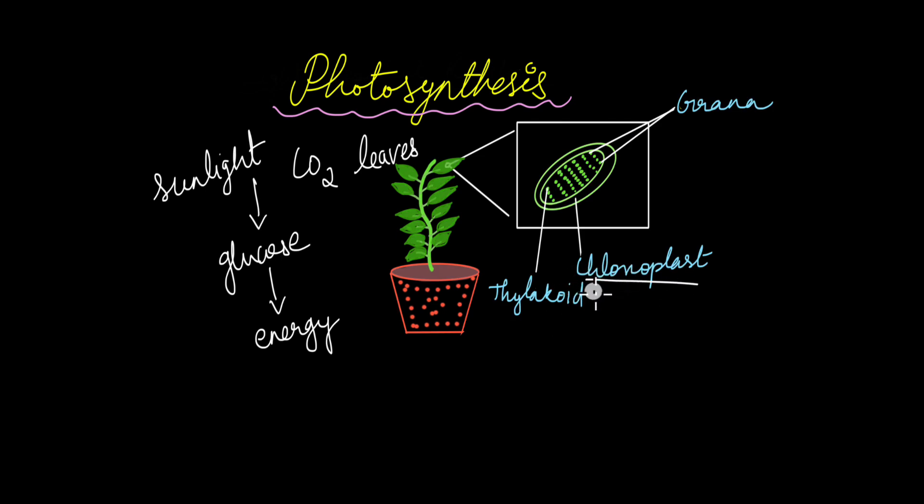The chloroplast contains structures known as thylakoids in which chlorophyll is present. Chlorophyll is the green pigment that gives the plants their green color. It has the ability to capture the energy from sunlight and make sure this entire photosynthesis process takes place.